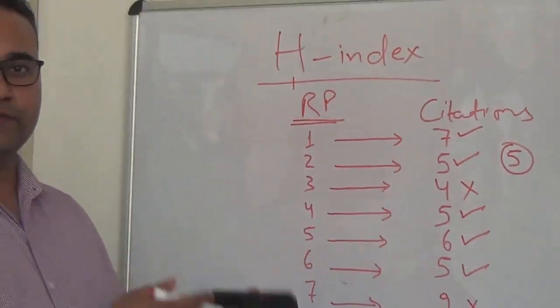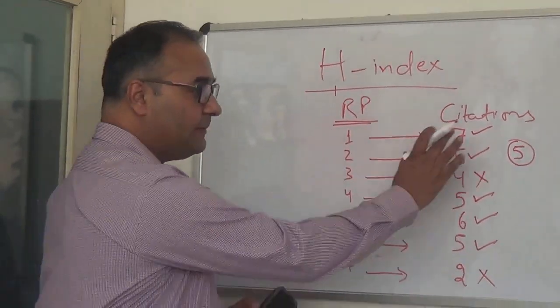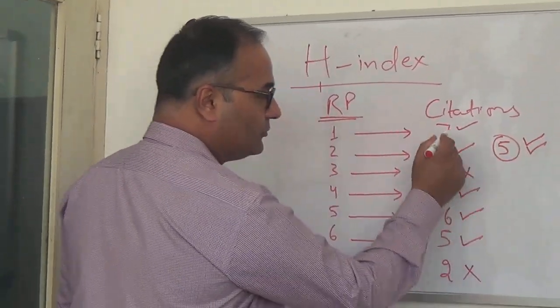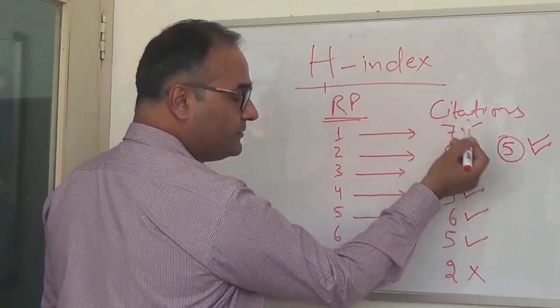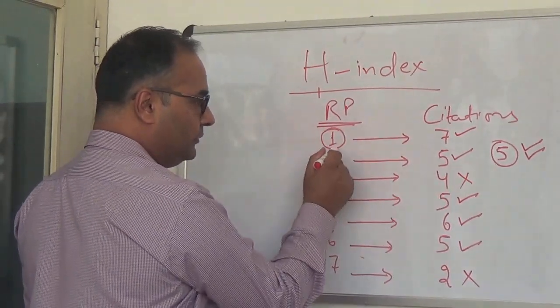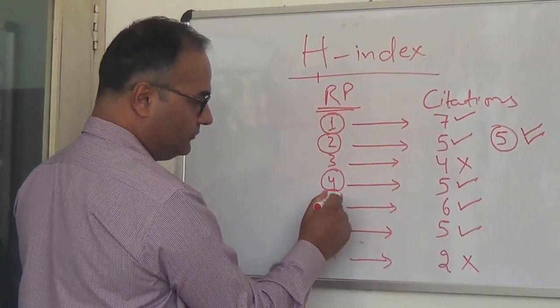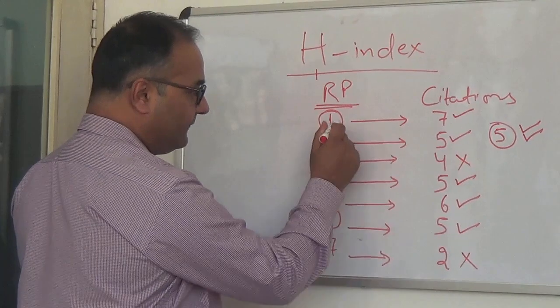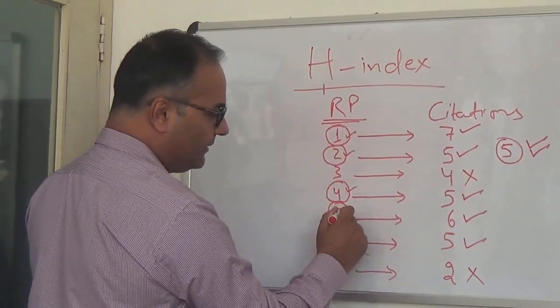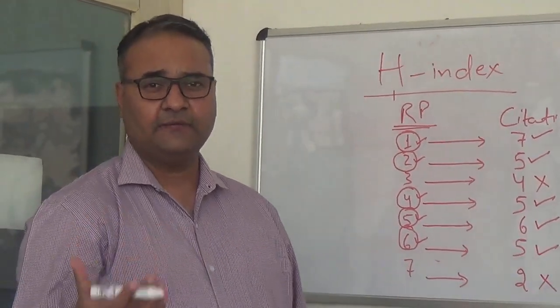So incidentally, although it was not prepared and I just wrote random numbers, in this particular case H-index stands to be 5. So there are 5 research papers—the papers which I am circling: 1, 2, 3, 4, and 5—which have been cited 5 or more number of times. So in this case, H-index is 5.